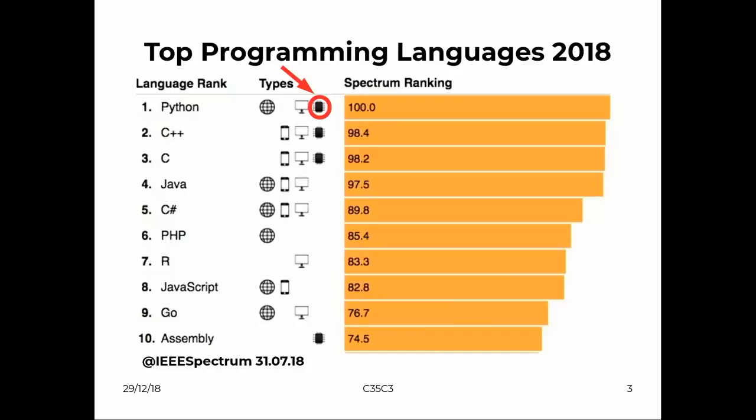The IEEE Spectrum realized this ranking of the most used programming languages in 2018. And it's very interesting, Python is on the top and it has a 100% coverage rank.